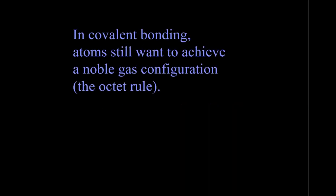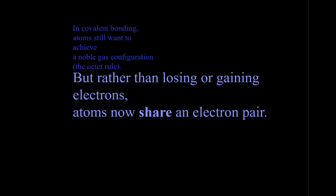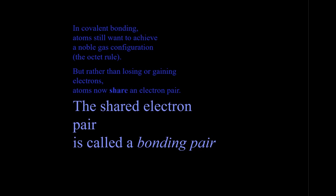So what are covalent bonds? Covalent bonds are different. Now atoms still want to achieve a noble gas configuration. They still want that octet. But because it's between two nonmetals and nonmetals are more electronegative, instead of losing or gaining electrons, they will share an electron pair. This shared electron pair is called a bonding pair. Now today we're going to simply go over nonpolar covalent bonds, and tomorrow we will introduce polar covalent bonds.